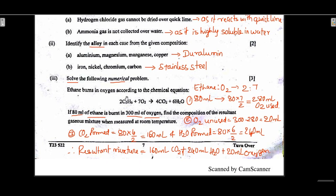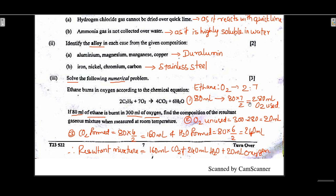Solve the numerical problem on burning of ethane. All substances are in gaseous state; 80 ml of ethane is burned in 300 ml of oxygen. The ratio of ethane to oxygen is 2:7, so for 80 ml of ethane, 280 ml of oxygen is used. Given 300 ml oxygen, unused oxygen is 300 minus 280 equals 20 ml.